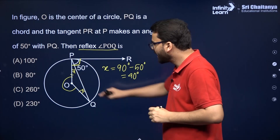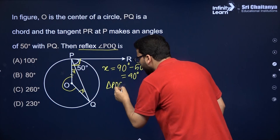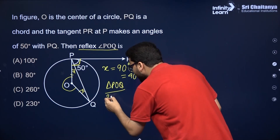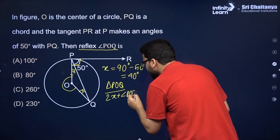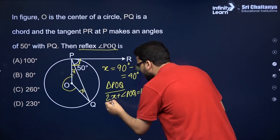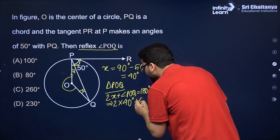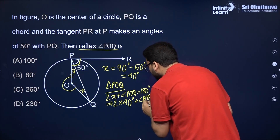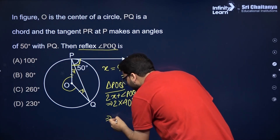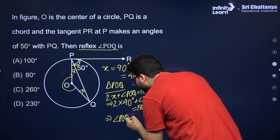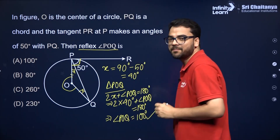Now using the angle sum property in triangle POQ: 2x plus angle POQ equals 180 degrees. Since x equals 40 degrees, that gives 80 plus angle POQ equals 180. So angle POQ comes out to be 100 degrees.